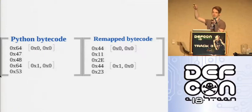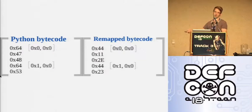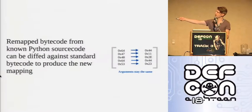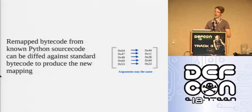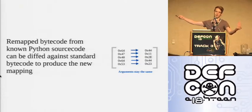Do this for enough Python source code and you'll hit all the bytecode instructions and get the new mapping. Since everybody distributes the runtime in package files containing all the normal Python modules like os.py and sys.py, we have access to standard library modules to use as our plaintext. Comparing the obfuscated .pyc files they distribute against a normally compiled .pyc gives us the opcode mapping back out.